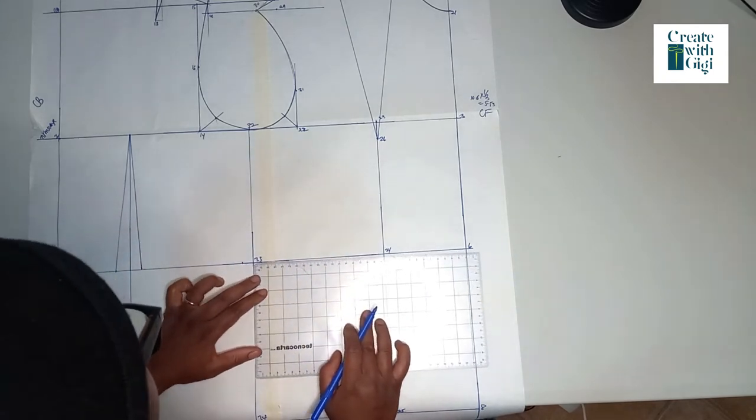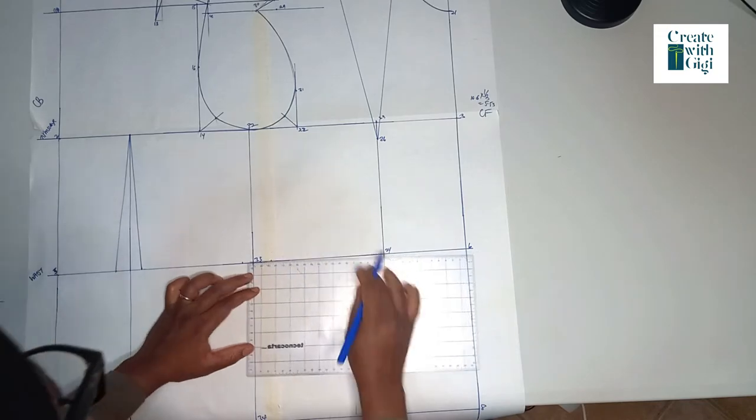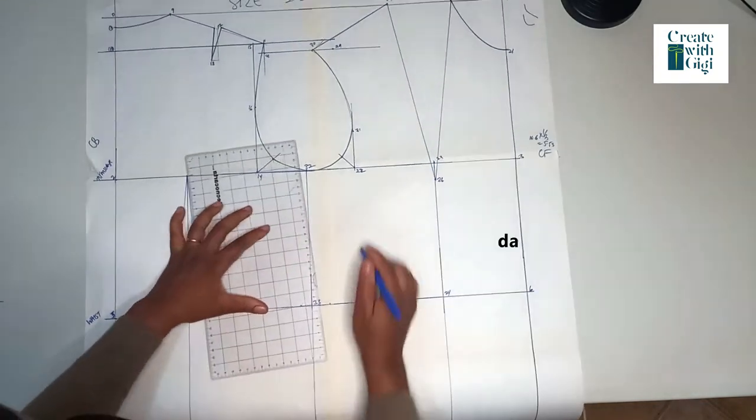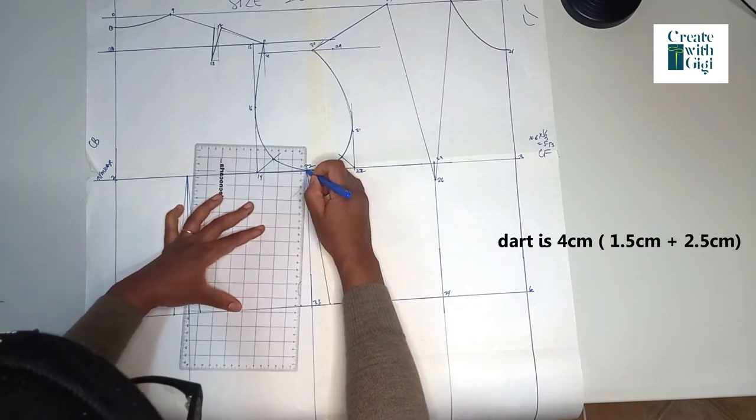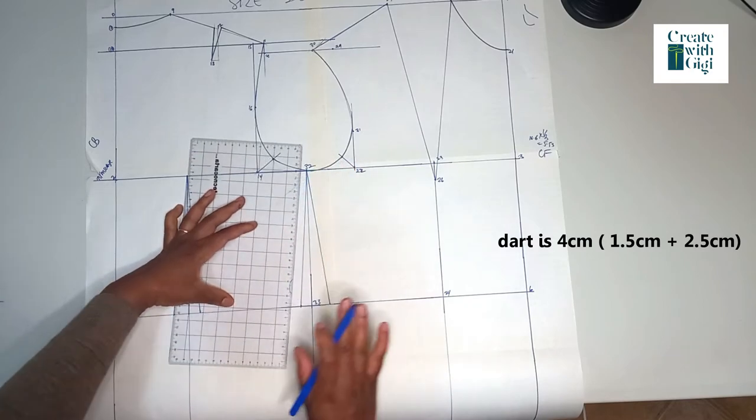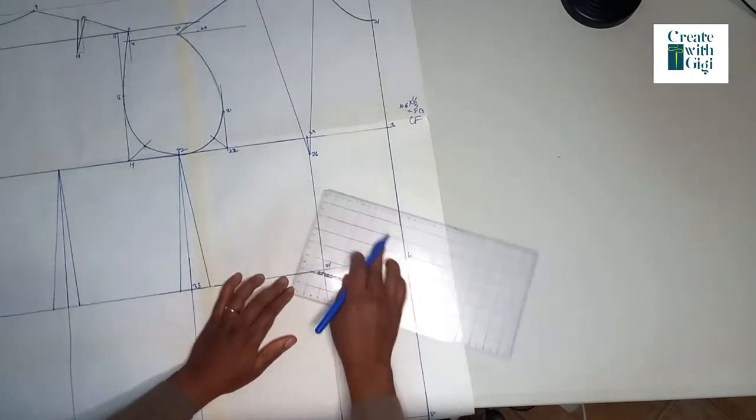From the side seam, we're going to take away 1.5 centimeters from the left-hand side and 2.5 centimeters from the right-hand side towards the center front, and we're going to draw it up to that midpoint at the armhole.